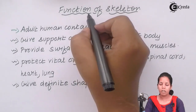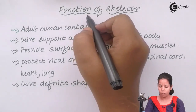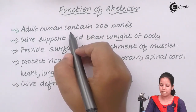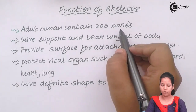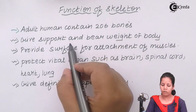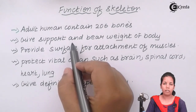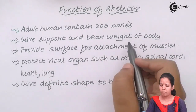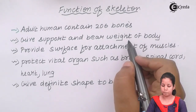The functions of the skeleton system: an adult human being basically will have 206 bones. The first or basic function of the skeleton system is that it provides support and bears the weight of the body — or simply, the organs.